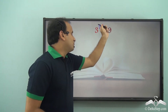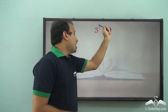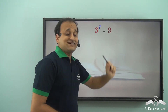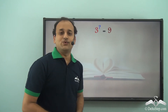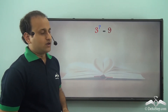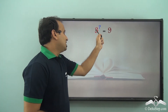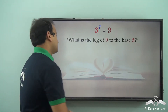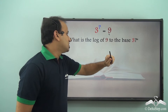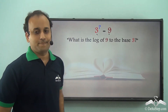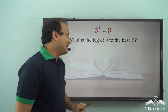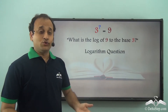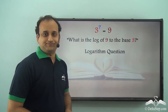Now, if instead we remove the power — we don't know what power 3 must be raised to in order to get 9 — that is where logarithms come in. In mathematical terms, '3 to the power of what equals 9?' is written as: what is log₃(9)? The answer is 2. This is a logarithm question.